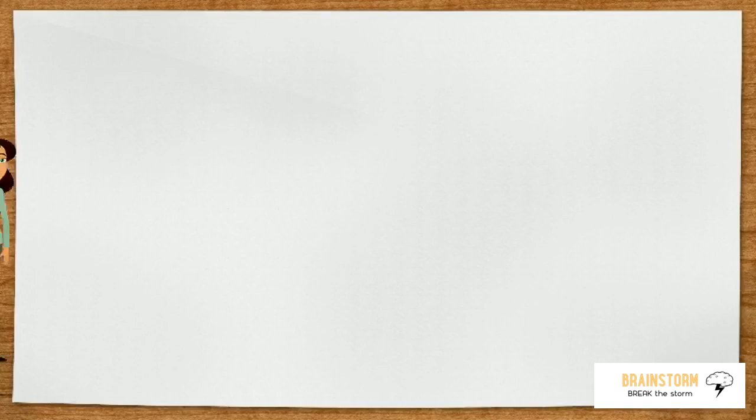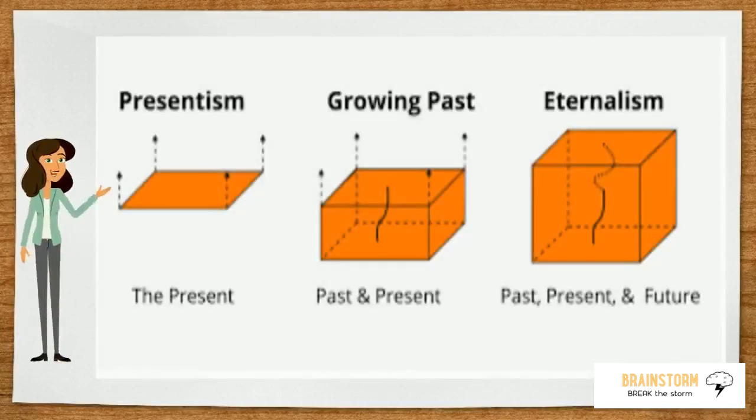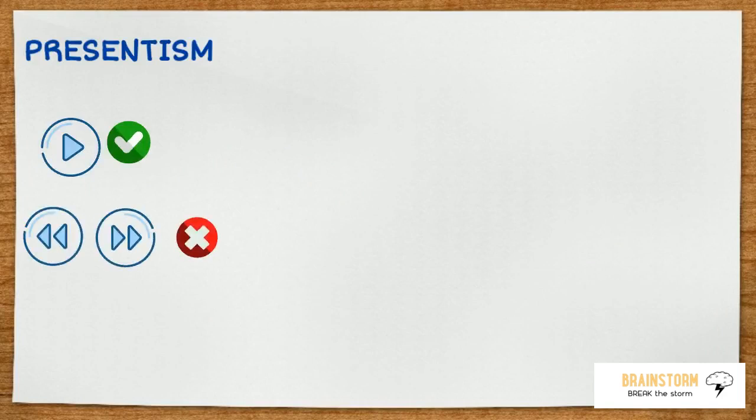There are many theories about time around us, like eternalism, presentism, growing block. In presentism, only present exists. Neither the future nor past exists.